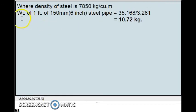To convert it into feet, what we will do? We will divide 35.168 by 3.281. This is 1 meter is equal to 3.281 feet. That is equal to 10.72 kg. This is the weight of 6 inch steel pipe.